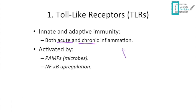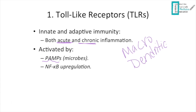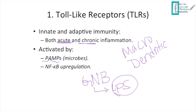In acute inflammation, TLRs are found on macrophages and dendritic cells — cells of innate immunity. They recognize molecules on microbes called pathogen-associated molecular patterns (PAMPs). For example, gram-negative bacteria have lipopolysaccharide (LPS), which macrophages recognize via PAMPs.